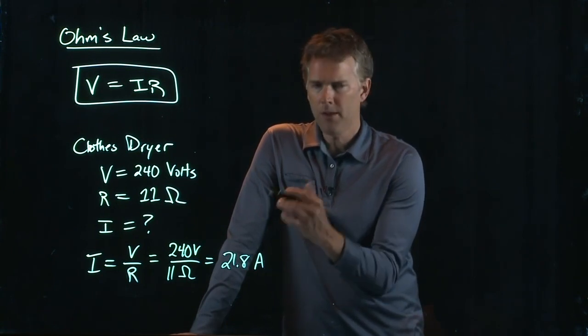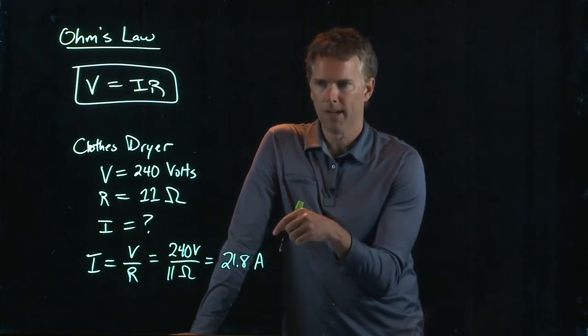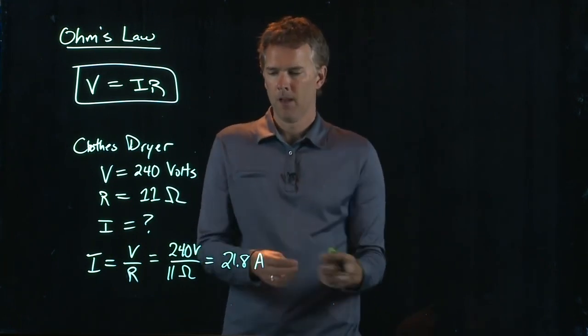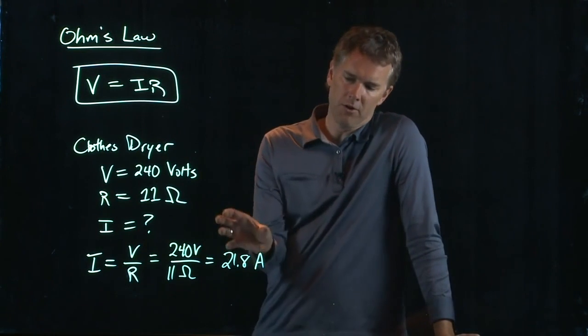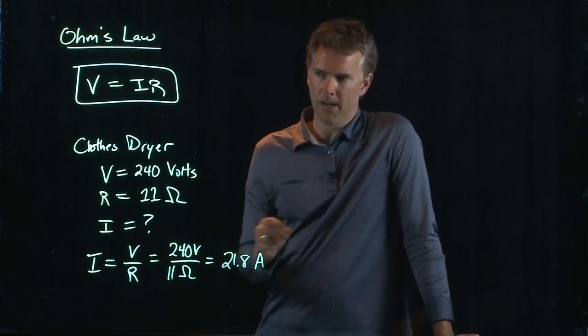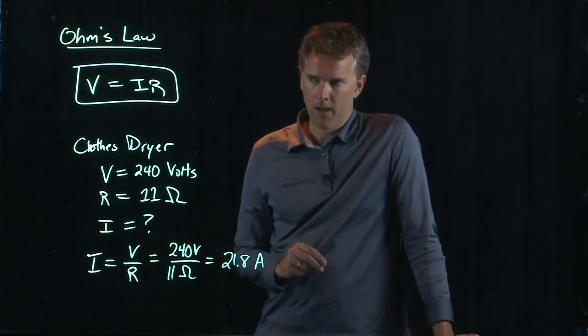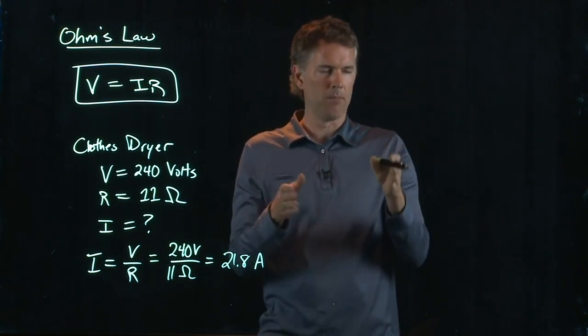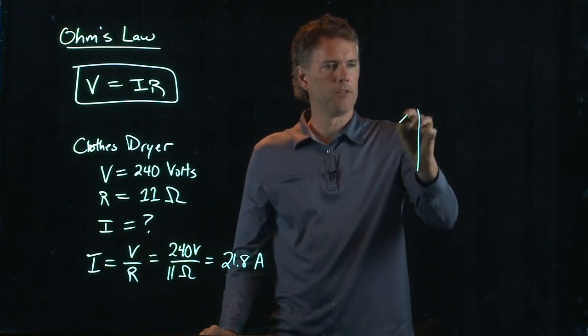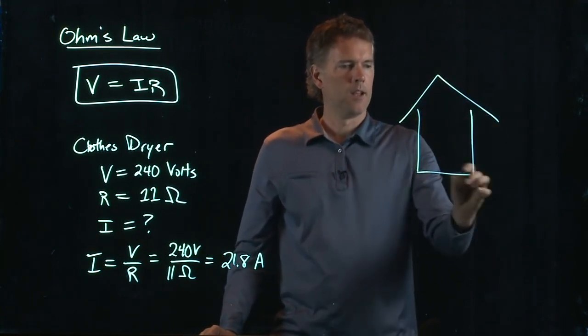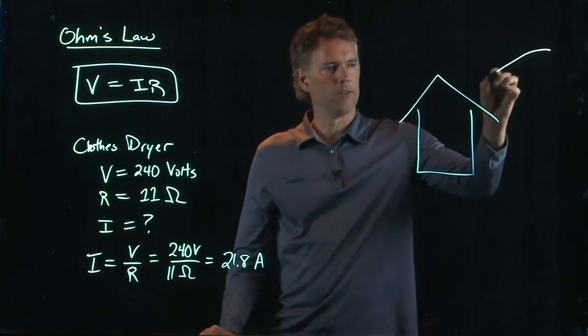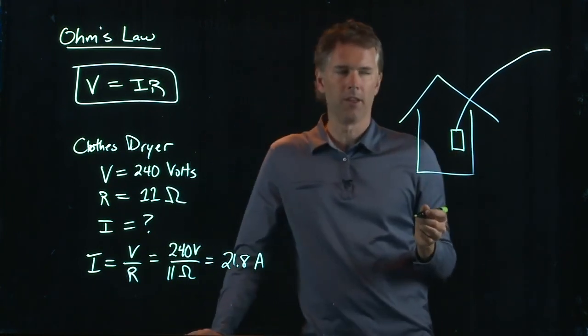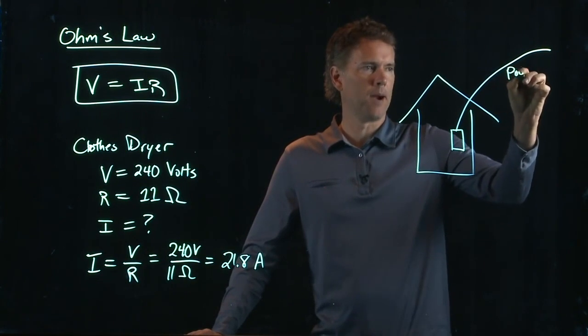So, when you think about the current that's going into your house, we had 100 amps that was going into our house, but now on one device, you're using a fifth of that, 21.8 amps. And when the power comes into your house, it goes into this big metal box, right? Here's your house, and the power comes in from the line, and then there is a big box, which is the first thing that it attaches to. This is the power line.